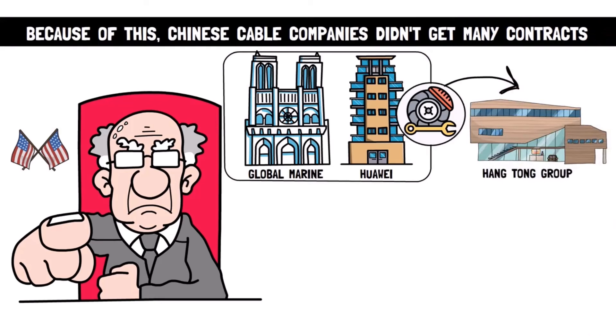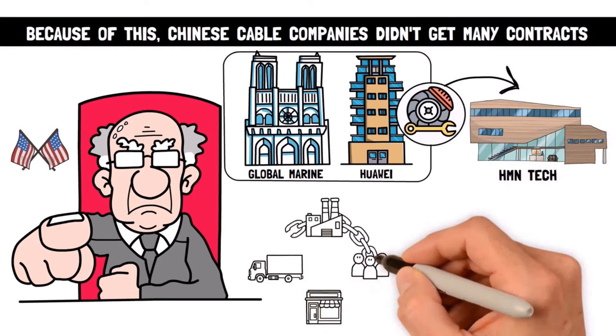Because of this, Chinese cable companies didn't get many contracts. The US threatened to punish them, so two companies, Global Marine and Huawei, sold their parts of a joint project to another company called Hang Tong Group, which changed its name to HMN Tech. But by then, the damage was already done.